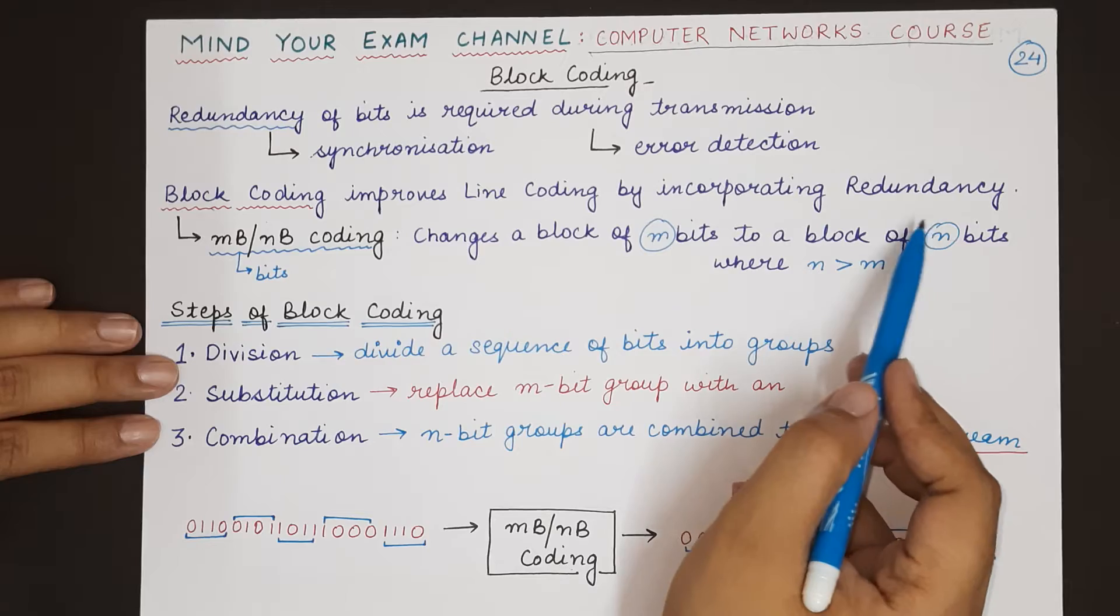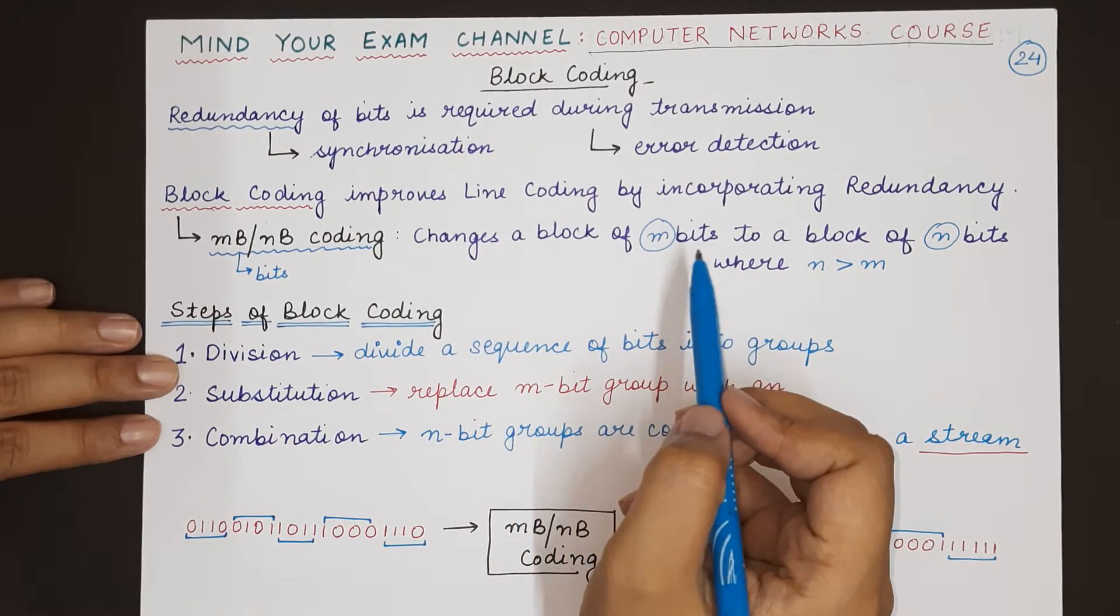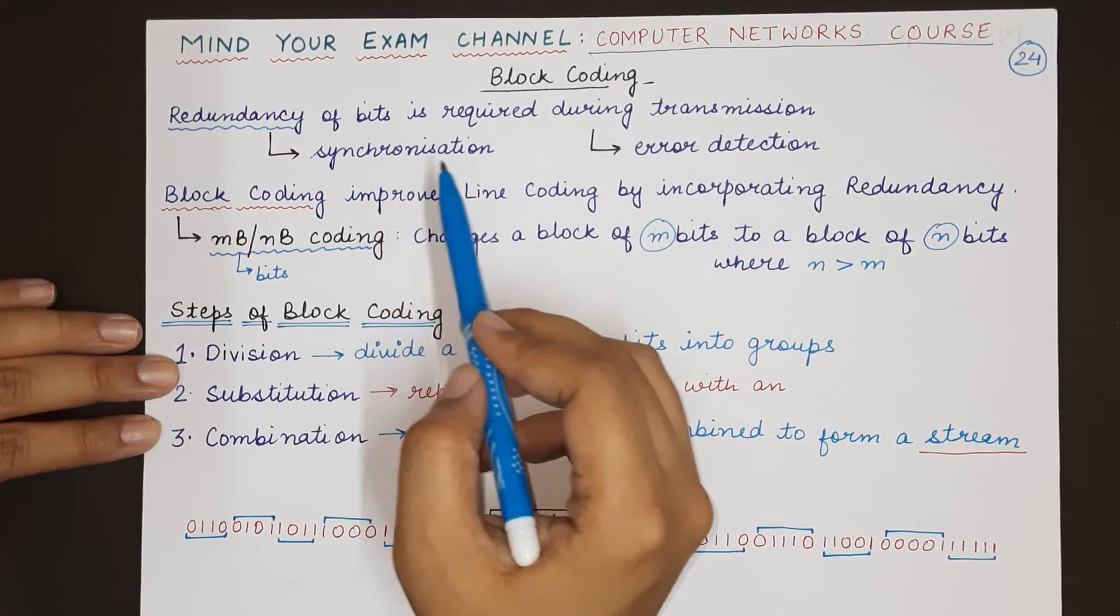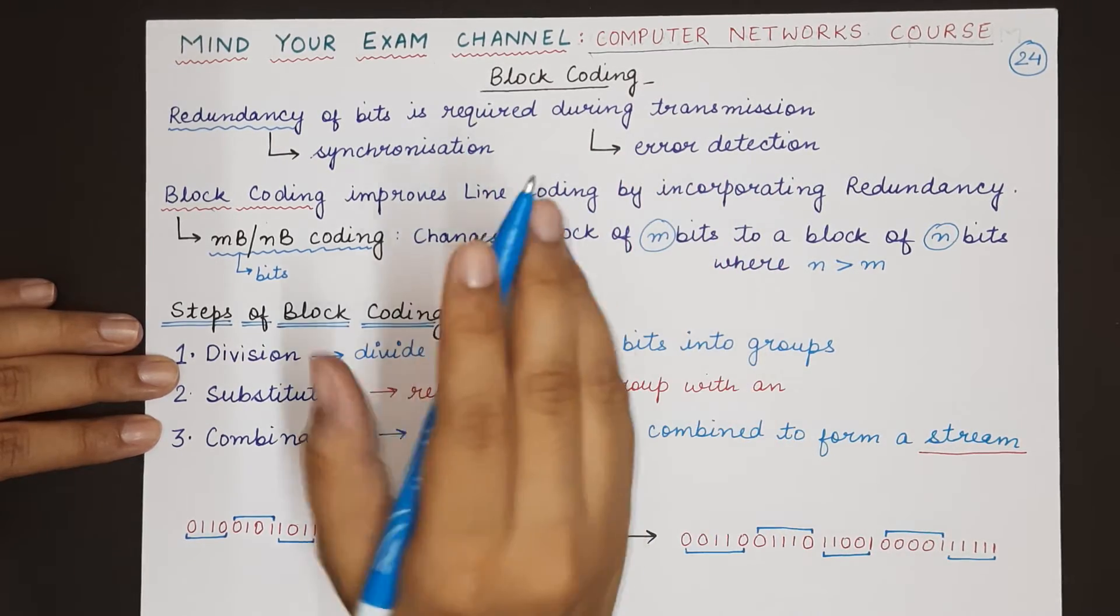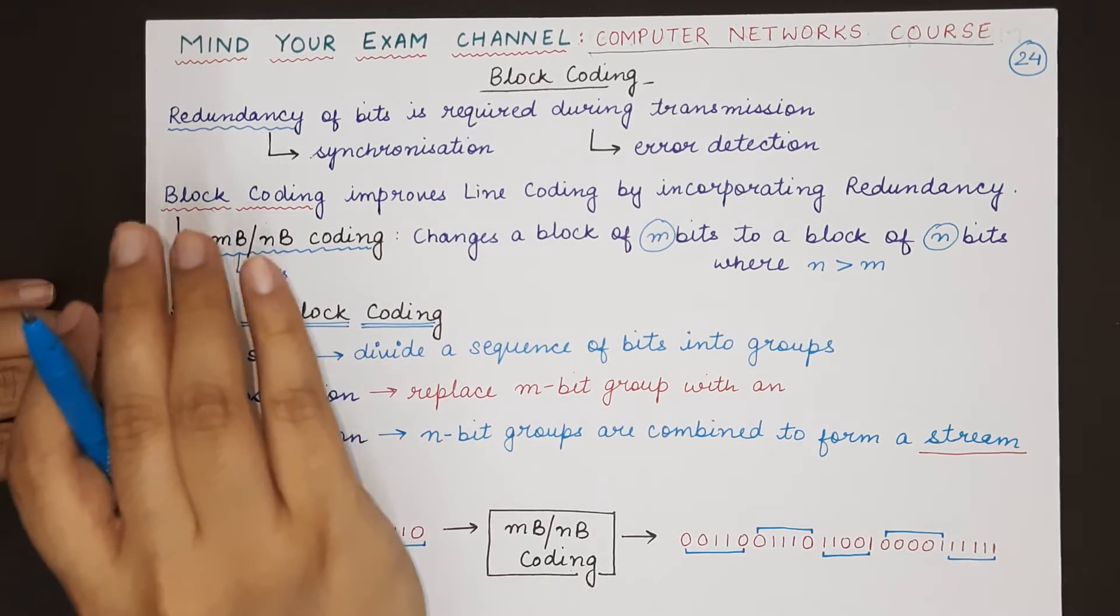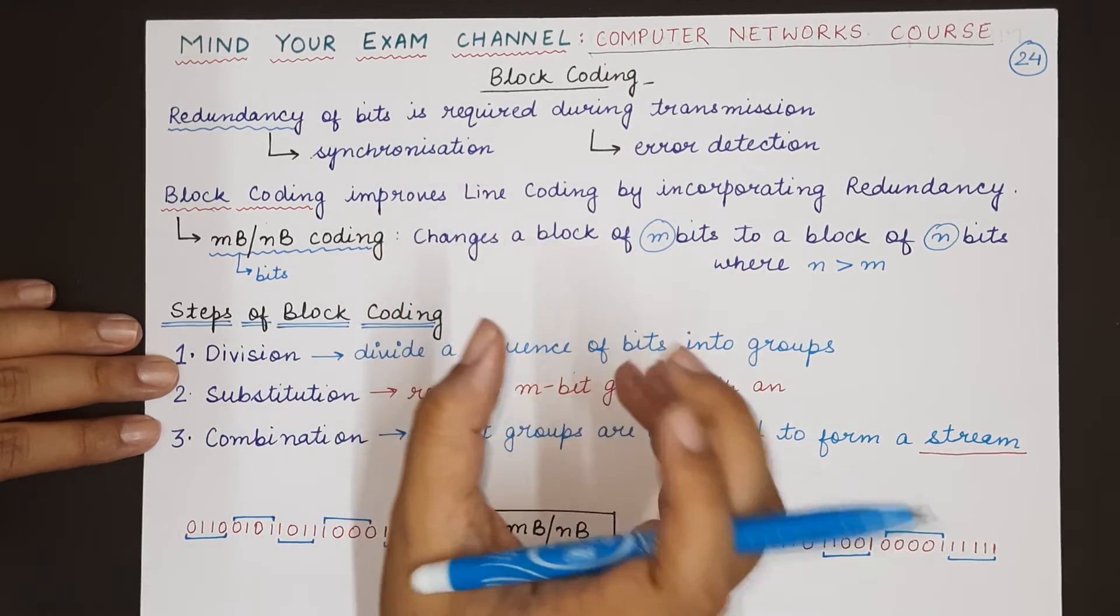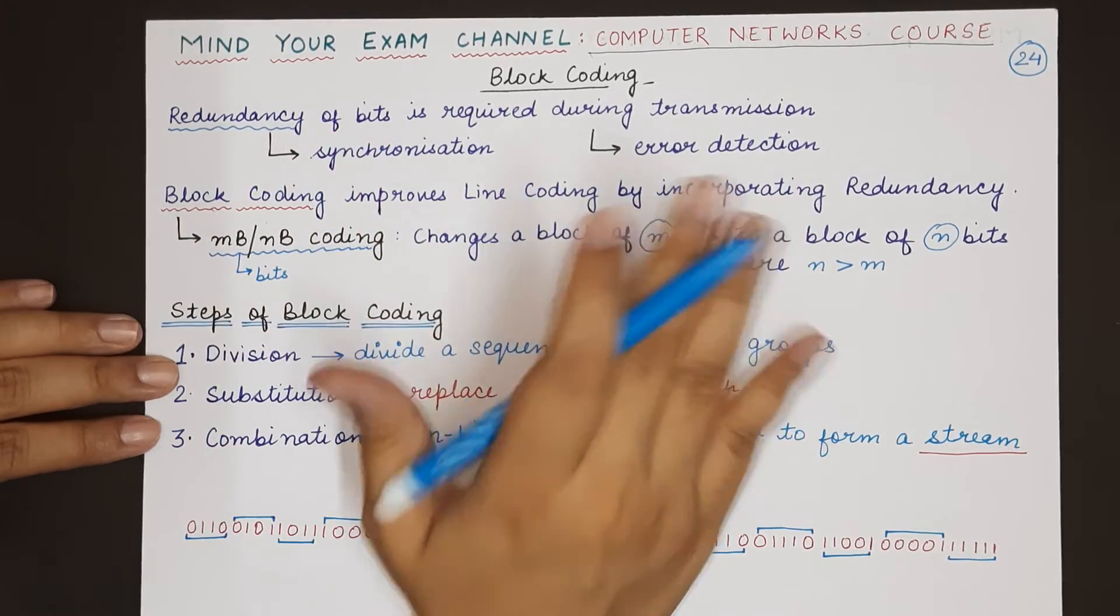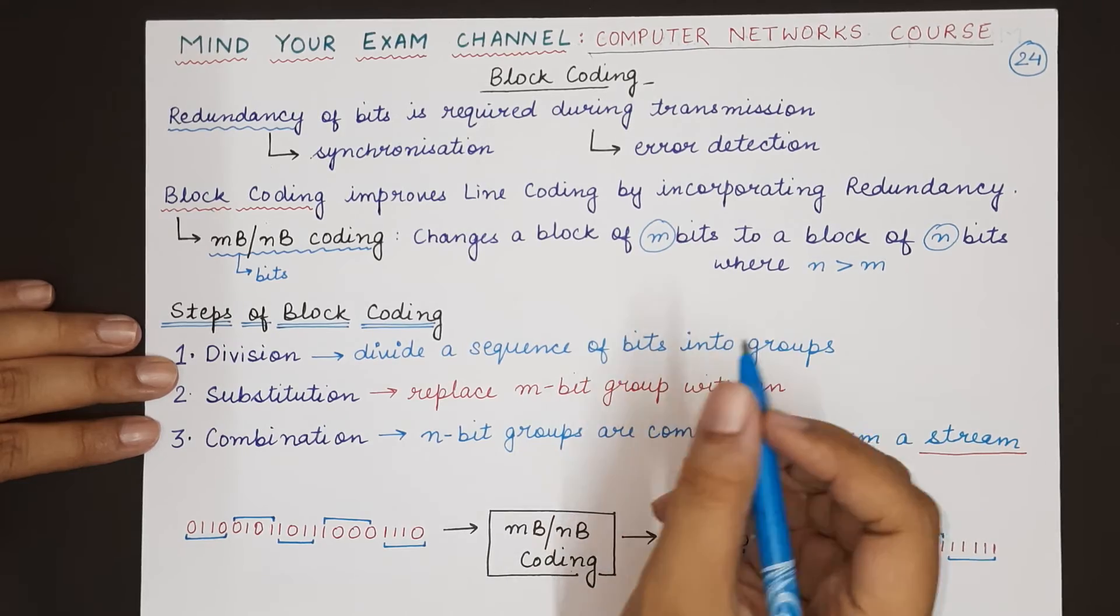Generally, we divide the entire stream of data into blocks of equal sizes of m bits each, and each of those blocks of m bits are replaced with blocks of n bits, where n has to be greater than m. Then only some extra bits will be introduced along with these m data bits, and those extra bits are actually used for error detection and synchronization.